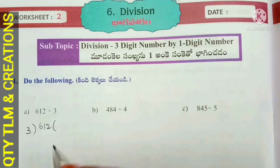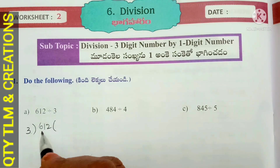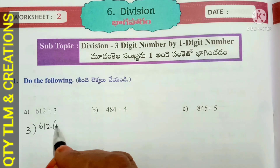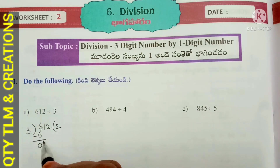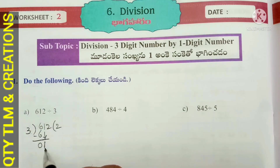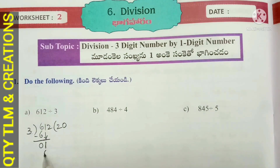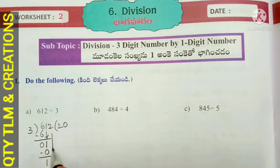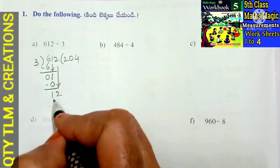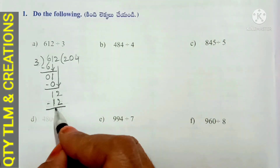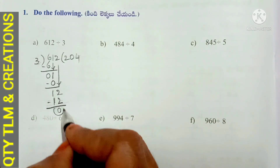612 divided by 3. We start with the hundreds place, which is 6. 3 divides 6 for 2 times; 3 twos are 6. Subtract 6 from 6, we get 0. Bring down 1. 1 is less than 3, so 3 cannot divide 1; write 0. Subtract 0 from 1, we get 1. Bring down 2: 12. 3 divides 12 for 4 times; 3 fours are 12. Subtract, remainder is 0.